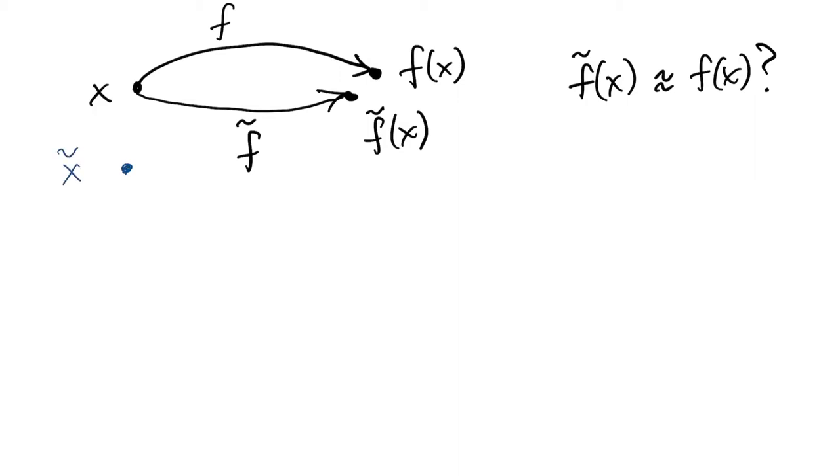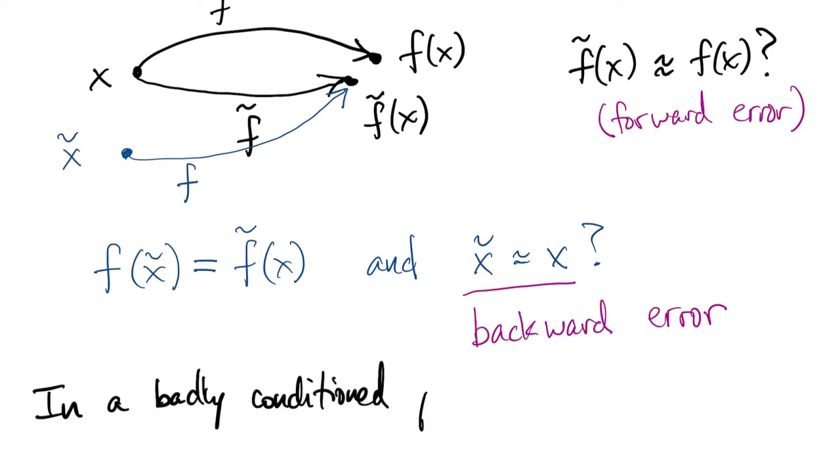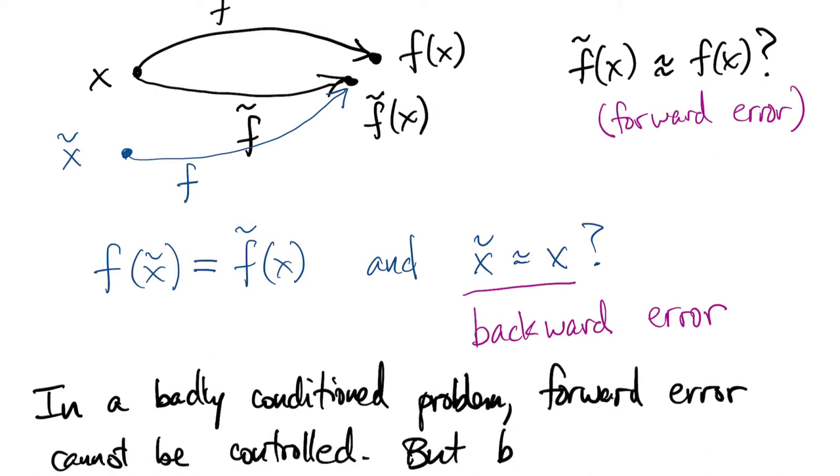It turns out that instead of asking, is the result of the algorithm close to the correct result, we're going to look at it backwards. Whatever result we get from the algorithm, from f tilde, there must have been some data on the other side that would give us that as the exact solution. In other words, did we solve a problem for data that's close to the original data? Not just did we get close to the right answer, but did we answer something close to the right question? This difference between the original data and the data that it would take to get the answer we saw is called the backward error. Ideally, the best algorithms can keep the backward error small, even when the forward error can't be controlled because of ill-conditioning.